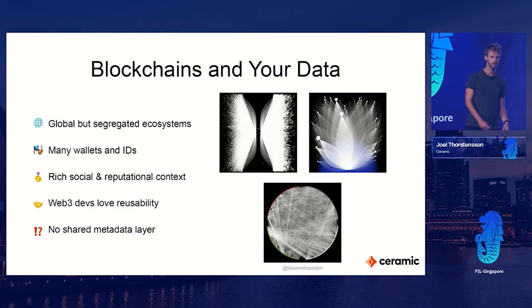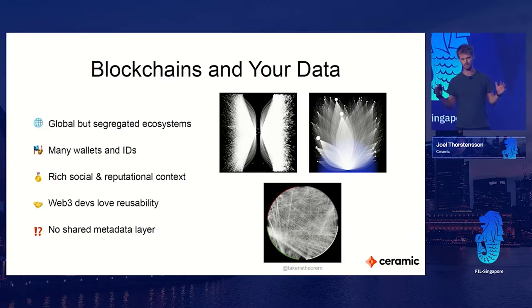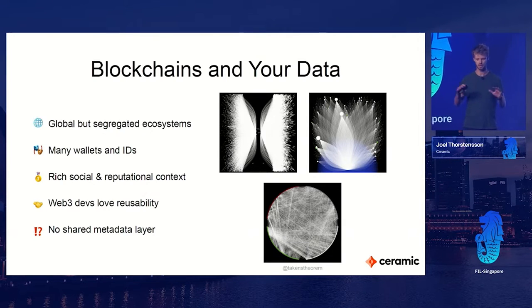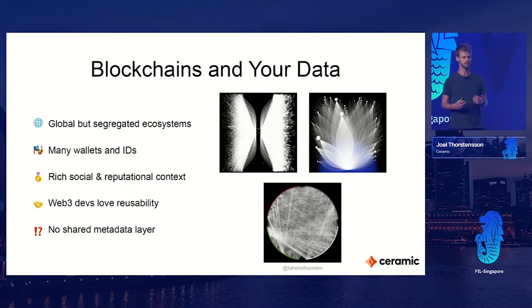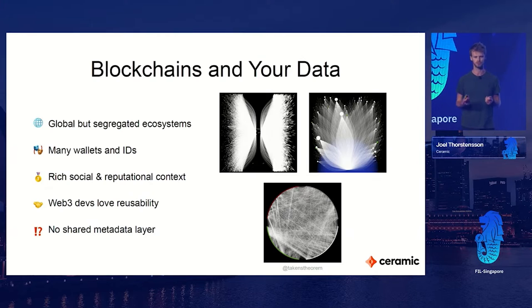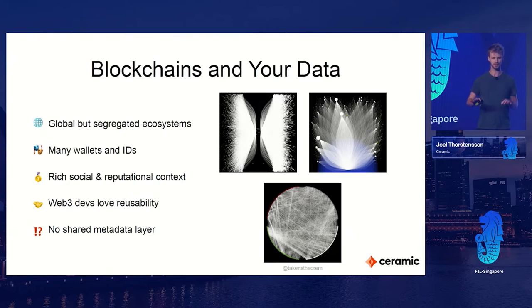A lot of data already exists in our ecosystem - in the Web3 ecosystem generally, on Filecoin, on Bitcoin, Ethereum, Tezos. We've created a lot of data interactions, primarily financial but also some more general data things on blockchains. But they're segregated across different blockchains. If you've been in this space for a while, you most likely have a wallet on Filecoin, maybe on Ethereum, and so on. The data is segregated across these systems.